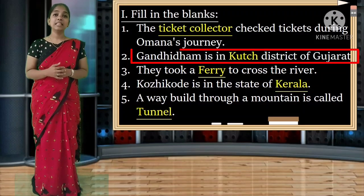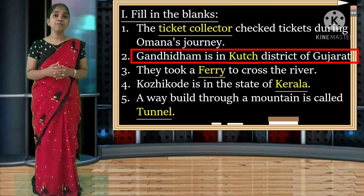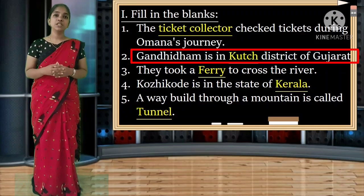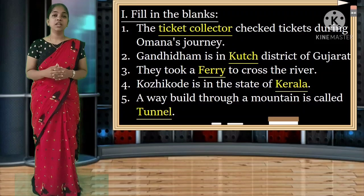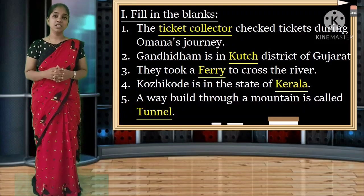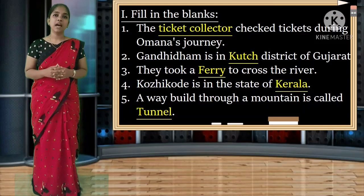Second: Gandhida is in Kutch district of Gujarat. Gandhida is located in Kutch district. Spelling of Kutch: K-U-T-C-H. Gandhida is in Kutch district of Gujarat.